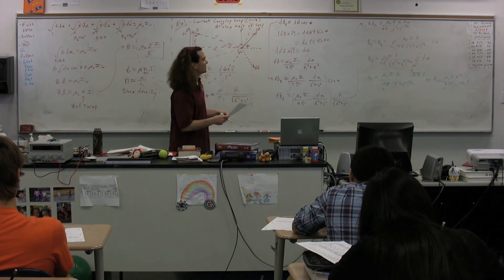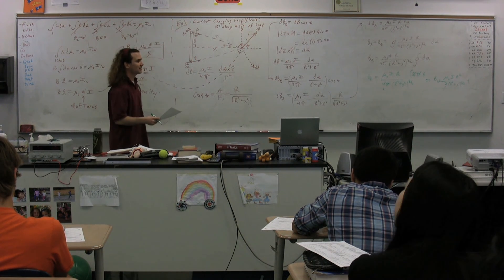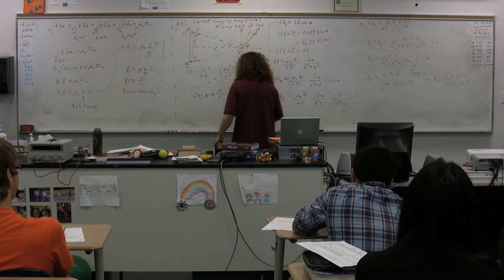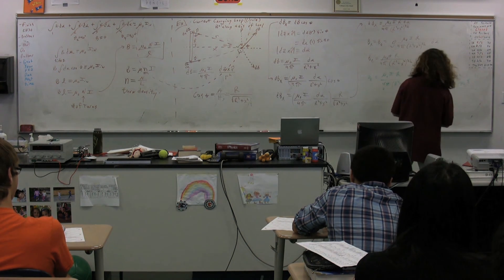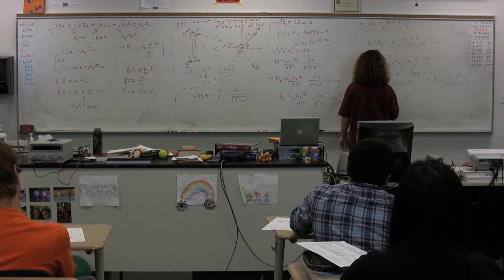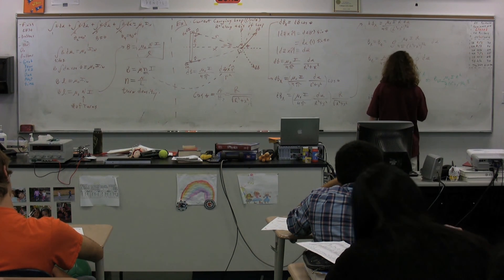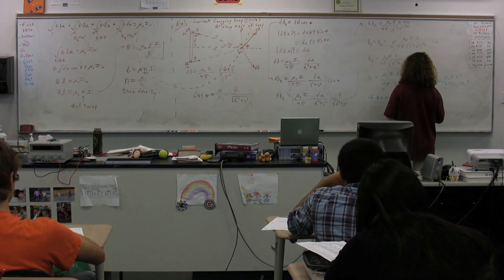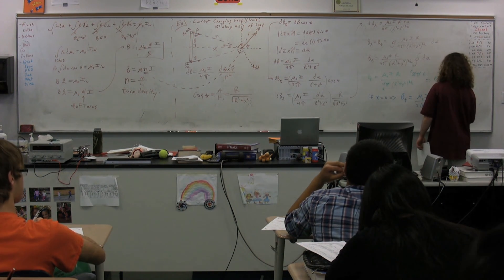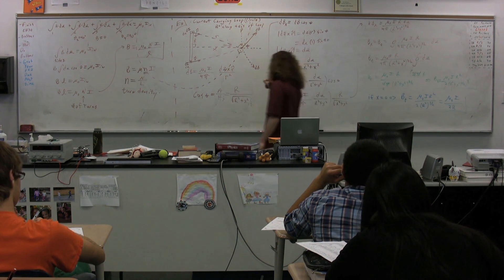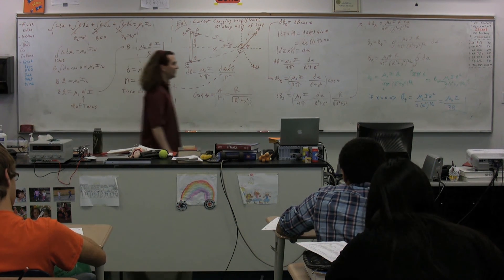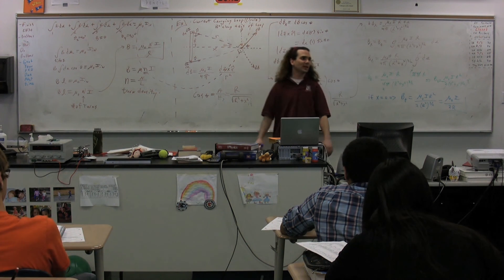That is the magnetic field at location P, which is a distance x along the axis. Notice that if x equals zero — that is, at the center of the circle — we get B equals mu-naught I times R squared over 2 times R squared to the 3/2 power, which is R cubed, giving B equals mu-naught I divided by 2R. We actually already figured out the magnetic field at the center of a circle, and this confirms that result.